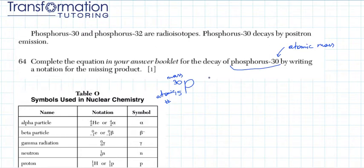Now it says that Phosphorus-30 decays by positron emission. That means it is emitting a positron particle and a positron will be on the right side. Anytime you hear the word emission, the particle will be on the right side.